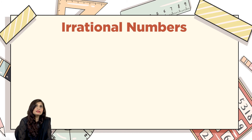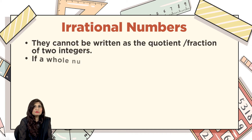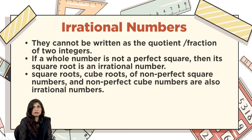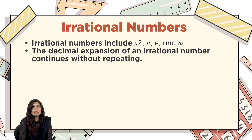These numbers are irrational numbers. Irrational numbers cannot be written as the quotient or fraction of two integers. If a whole number is not a perfect square, then its square root is an irrational number — meaning square roots and cube roots of non-perfect square and non-perfect cube numbers are irrational. Irrational numbers also include pi and the golden ratio. The decimal expansion of an irrational number continues without repeating.